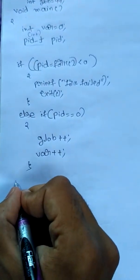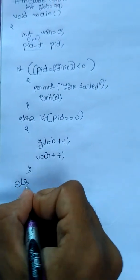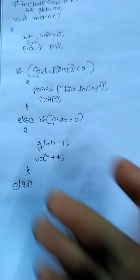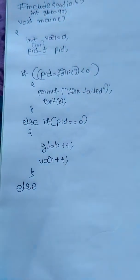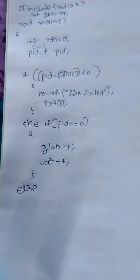Now in the else block — meaning we are in the parent process — I say something like this. Let's try to complete the program.